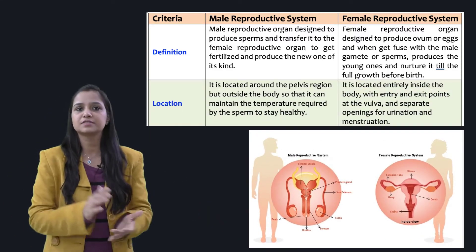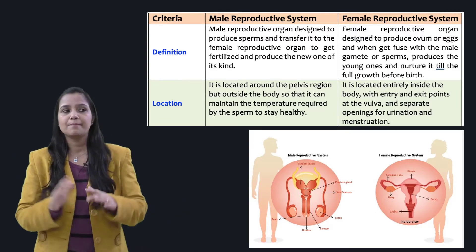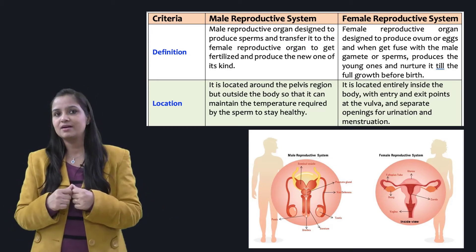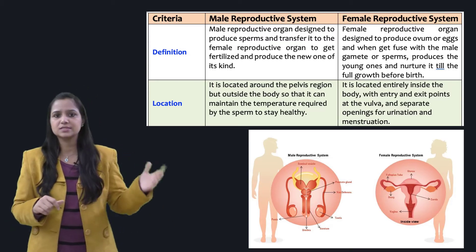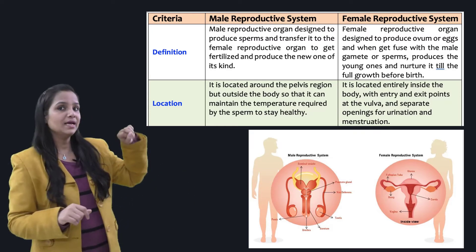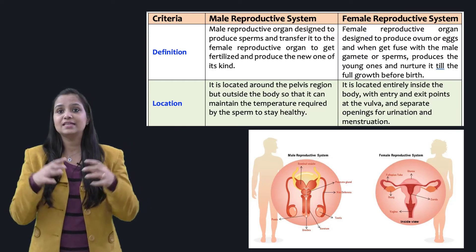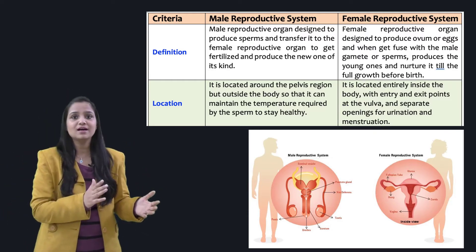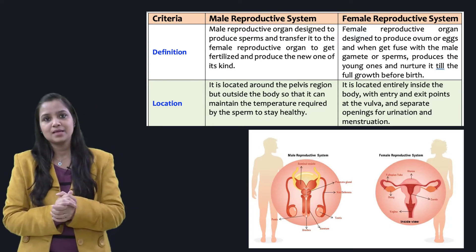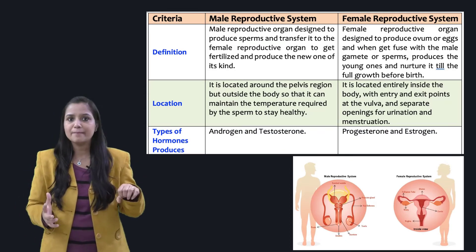The second important point is location. The male reproductive system is located around the pelvis region but outside the body, so that it can maintain the temperature required by the sperm to stay healthy. The female reproductive system is located entirely inside the body, with entry and exit points at the vulva and separate openings for urination and menstruation.